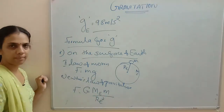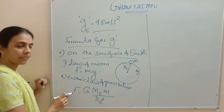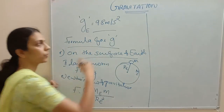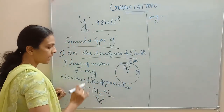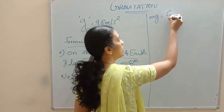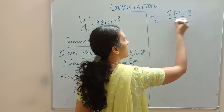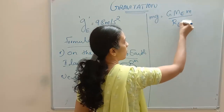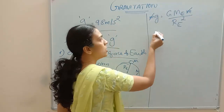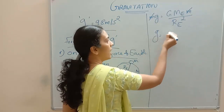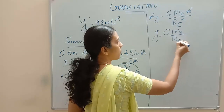So we can write it as G times M_E times m divided by R_E squared. This is the force of gravitation. Both left-hand sides are F, so we can equate the right-hand sides. We get m times g equals G times M_E times m divided by R_E squared. This m and this m will get cancelled, so we get g equals G M_E divided by R_E squared.